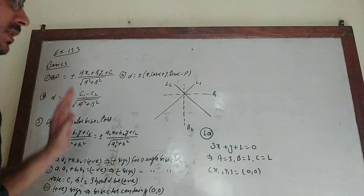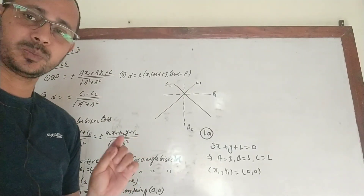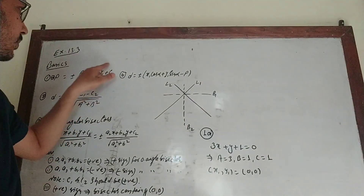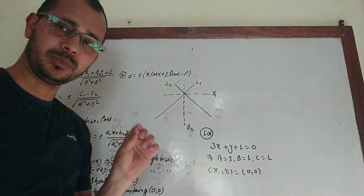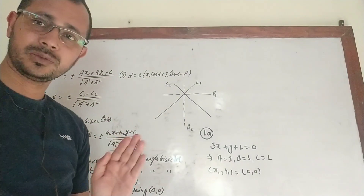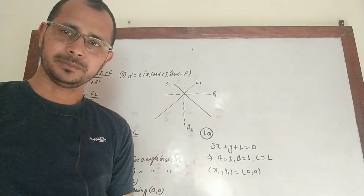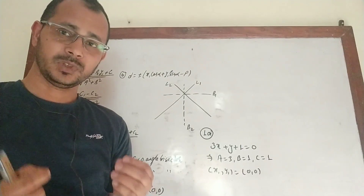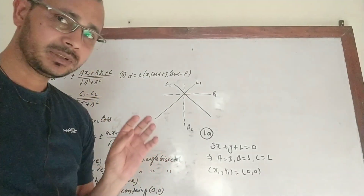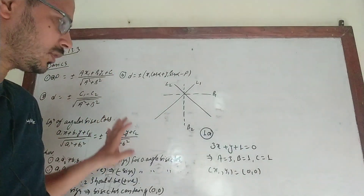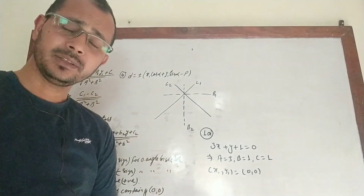To solve Exercise 13.3 problems, we mainly need some basic formulas. First, the perpendicular distance from a given point (x1, y1) onto a line ax + by + c = 0. Using this formula we can calculate the perpendicular distance from a point to a line. I will not go through the derivations — we'll focus on how to solve the book's exercise problems.